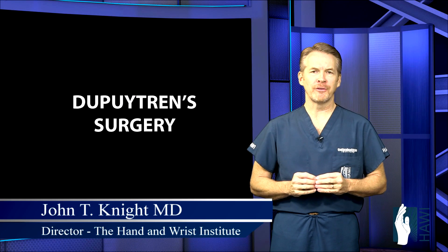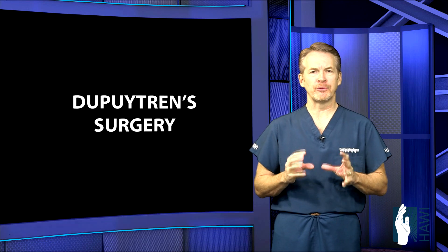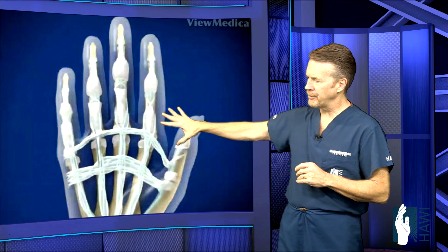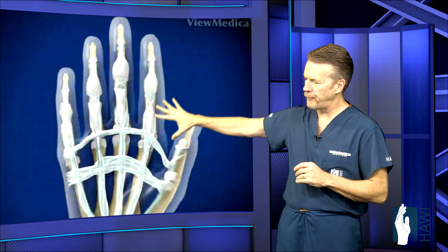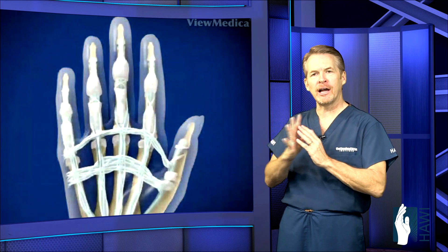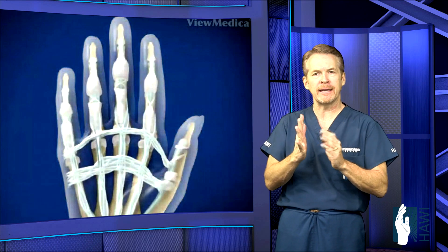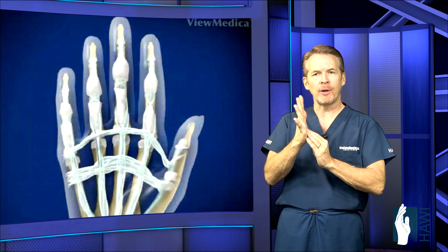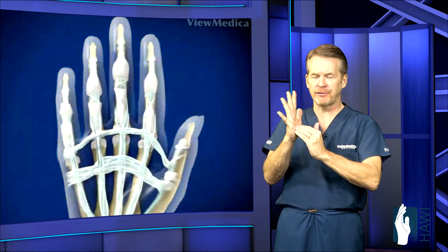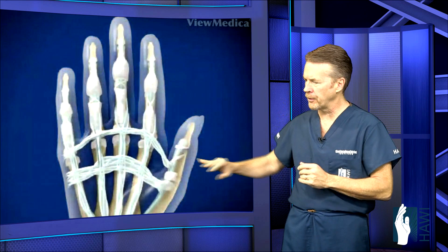Let's talk about Dupuytren's surgery. First, let's understand what Dupuytren's disease is. Let's take a look at the overall fascia. Fascia is a lining that's underneath the skin throughout the body, and in the palm, it extends from the mid-palm all the way out to the fingertips.